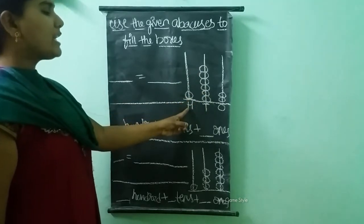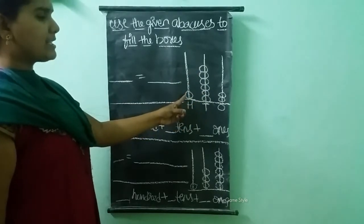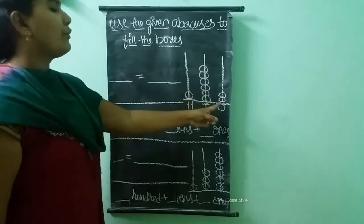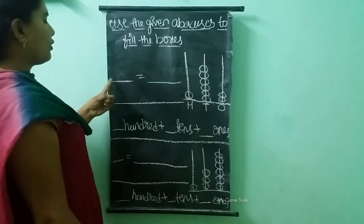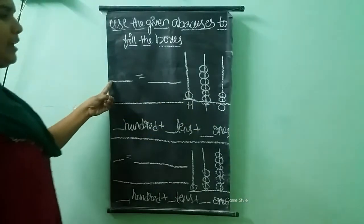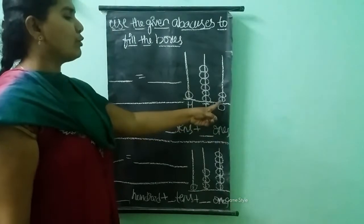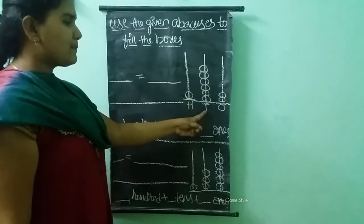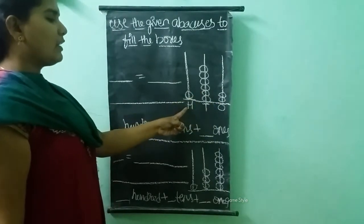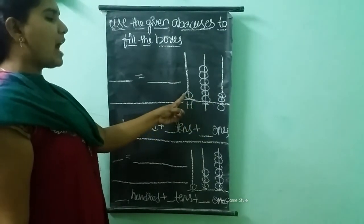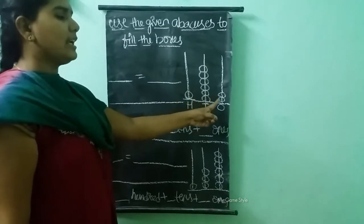In hundreds place, we have one bead. So by using this abacus, we need to write the number here. In ones place: two. Tens place: six beads. In hundreds place: one. One hundred and sixty-two.